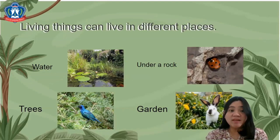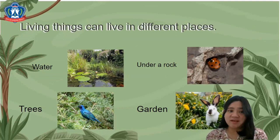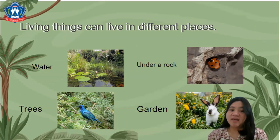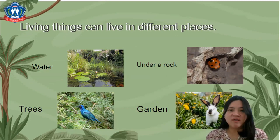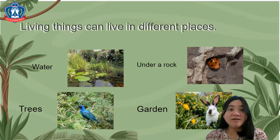Living things can live in different places. Please look at the picture. Can you spot the plants? They can be found in water, under the rock, in trees, and in the garden.